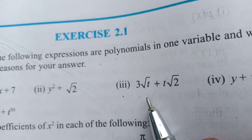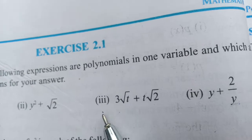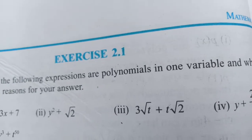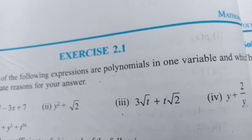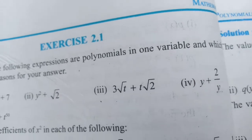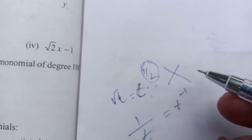Then the third one: 3√t + t√2. We have 3√t. We cannot take it as root t because root t means t raised to half.